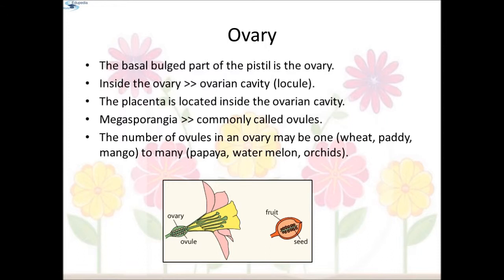The ovary is the basal bulged part of the pistil. Inside the ovary is the ovarian cavity called the locule. The placenta is located inside the ovarian cavity, and arising from the placenta are the megasporangia, commonly called ovules. The number of ovules in an ovary may be one — for example wheat, paddy, mango — or too many, like papaya, watermelon, and orchids. In fruits with many ovules, there will be many seeds.